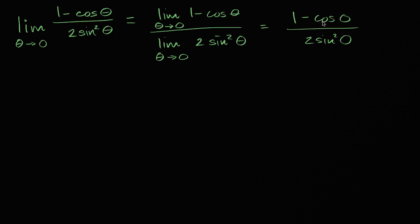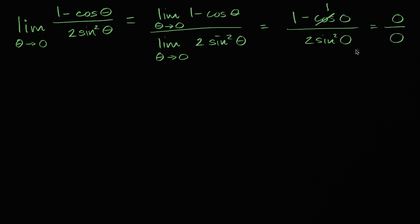Now, cosine of zero is one, and then one minus one is zero. And sine of zero is zero, and you square it you still get zero, and you multiply it times two you still get zero — so you get zero over zero.